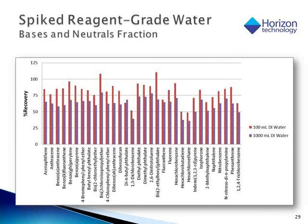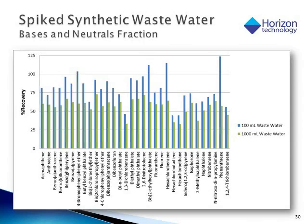Shown are the recoveries for bases and neutrals in reagent-grade water and in synthetic wastewater, each spiked with a test mix, with the 100-milliliter and 1-liter sample recoveries shown side by side. A slight edge on recoveries was obtained with the 100-milliliter sample volume in both matrices. The recoveries for reagent water and synthetic wastewater were very similar, with no indications of matrix interferences.